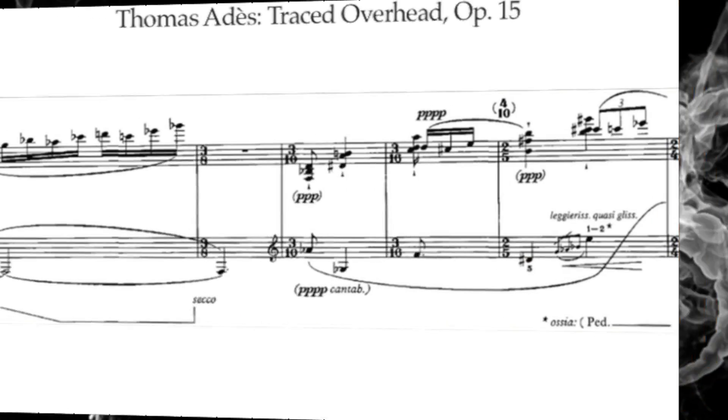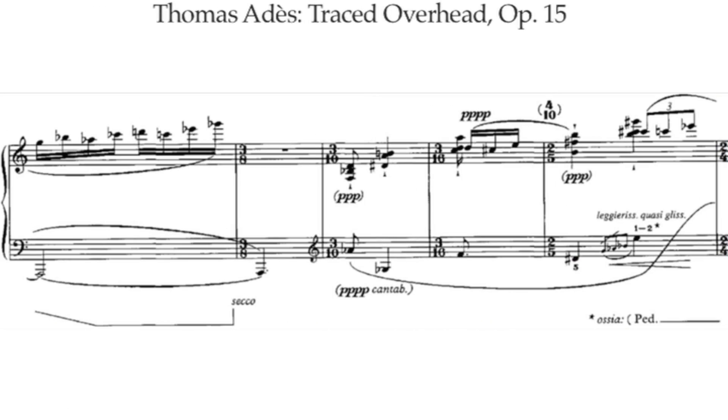So irrational time signatures are just dividing the whole note into ways that don't fit this exponential pattern, which gives you some odd denominators. Let's take a look at some. This is from Thomas Addis' piece, Traced Overhead, for solo piano. As we can see, there are two irrational time signatures in place: three ten and two five.